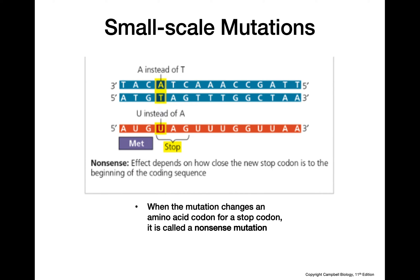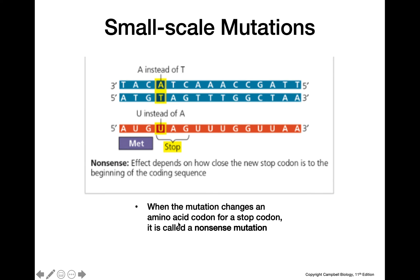Next, we have nonsense mutations. In a nonsense mutation, we change out one nucleotide for another, and that changes the codon into a stop codon instead of a codon for an amino acid. This can be really disastrous because the stop codon will prematurely stop the translation of the protein, resulting in what is called a truncated protein. These truncated proteins are more often than not going to be nonfunctional, so a mutation that results in the formation of a new stop codon can be really harmful to a cell.